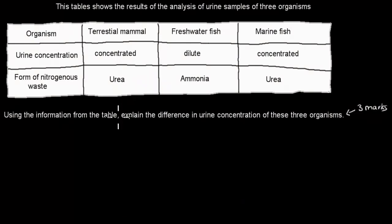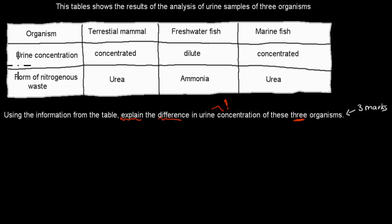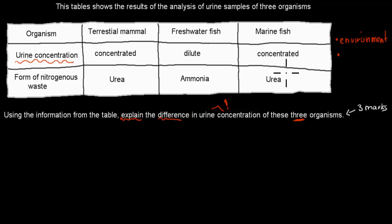Welcome back. For this kind of question, first re-read the actual question: using the information from the table, explain the difference in urine concentration. You have to explain all three organisms and why their concentrations differ. The question focuses on urine concentration, though you can include nitrogenous waste. For each organism — terrestrial mammal, freshwater fish, and marine fish — think about the environment they live in and then why they produce concentrated or dilute urine.